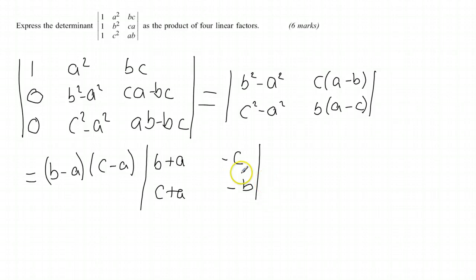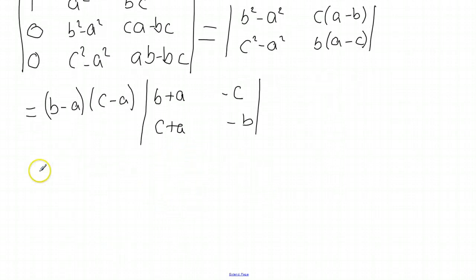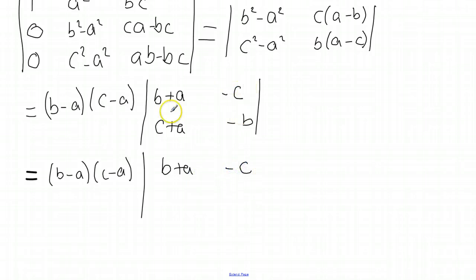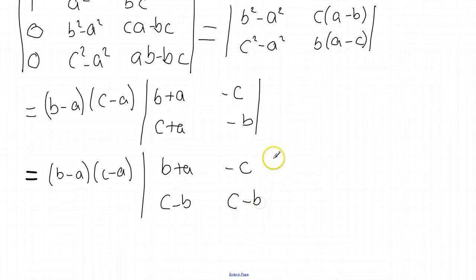Now from the two-by-two I subtract the top row from the bottom row. The first entry becomes (c − a) − (b − a) = c − b, and the second entry becomes −b − (−c) = c − b. So (c − b) is a common factor of the second row, which I take out as another linear factor.